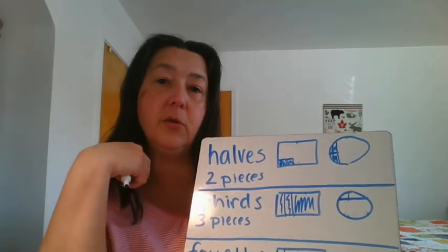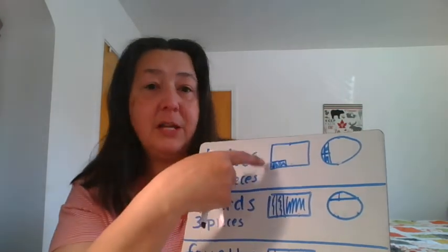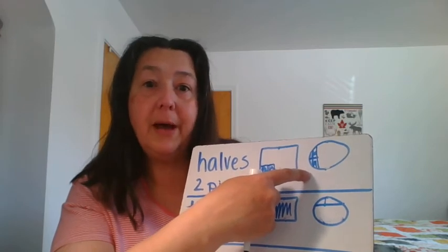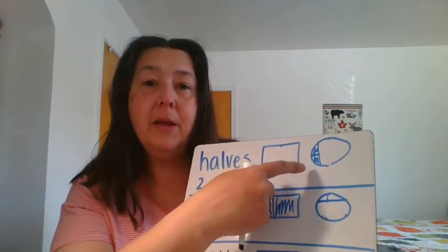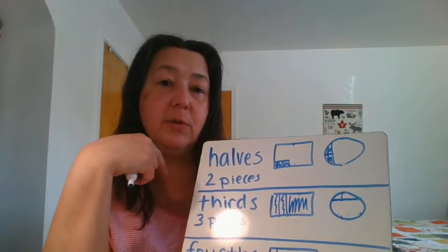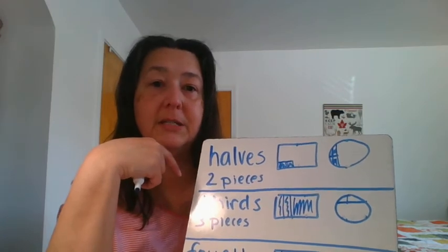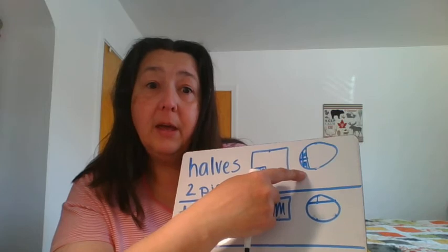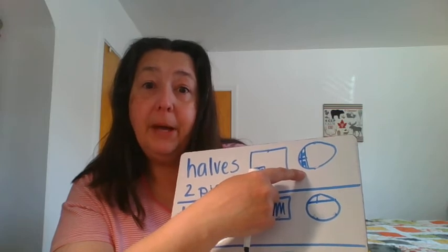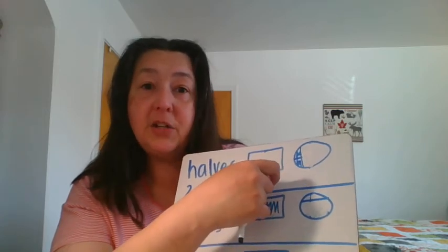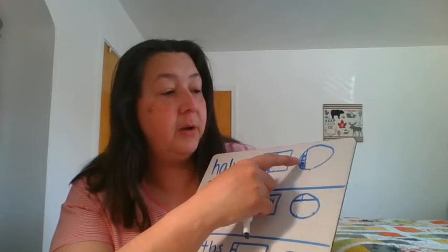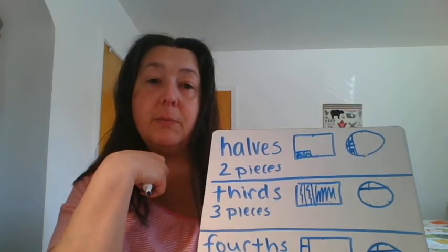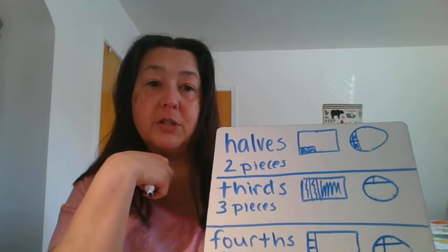Think of food — think of a pan of brownies or a cake that might be this shape, or pizza or a cookie or a pie that's this shape. If you're going to cut it in half and share it with somebody, you want equal pieces. Nobody wants to share the cake and only get that much when the other person is going to get a giant amount.